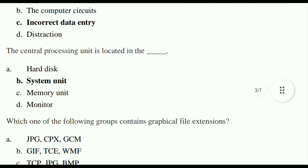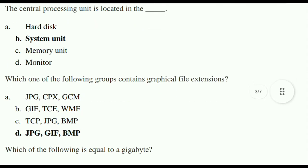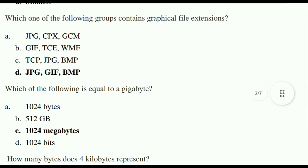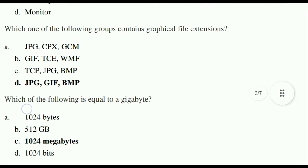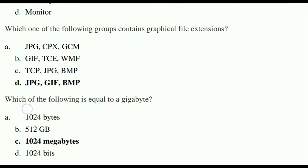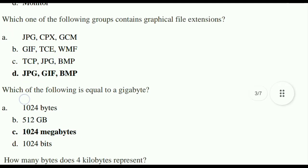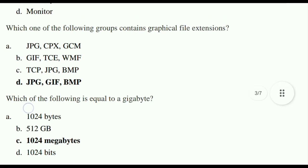The central processing unit, CPU, is located in the system unit. Which one of the following groups contains graphical file extensions? The correct answer is JPG, GIF, and BMP.